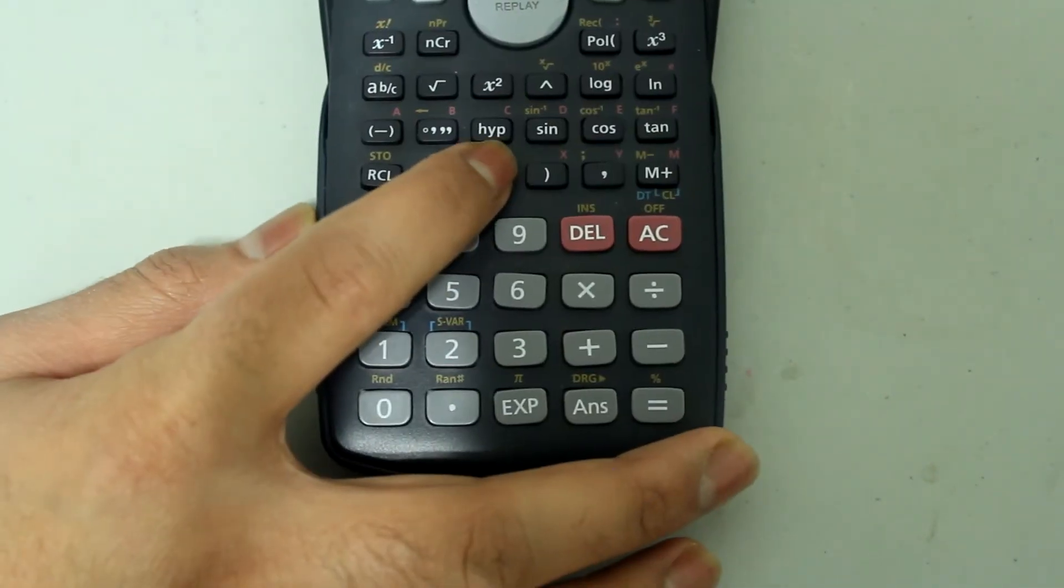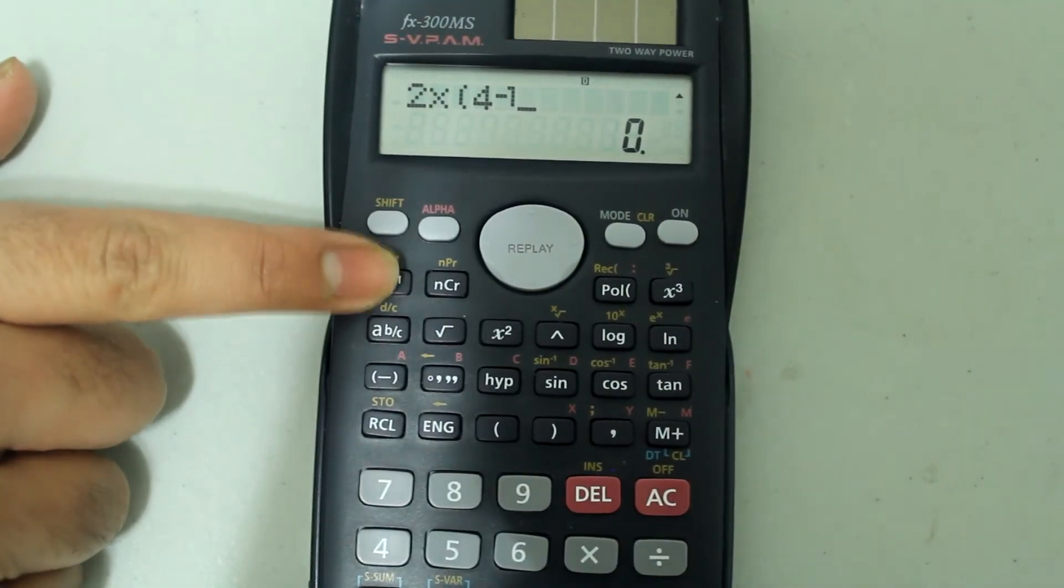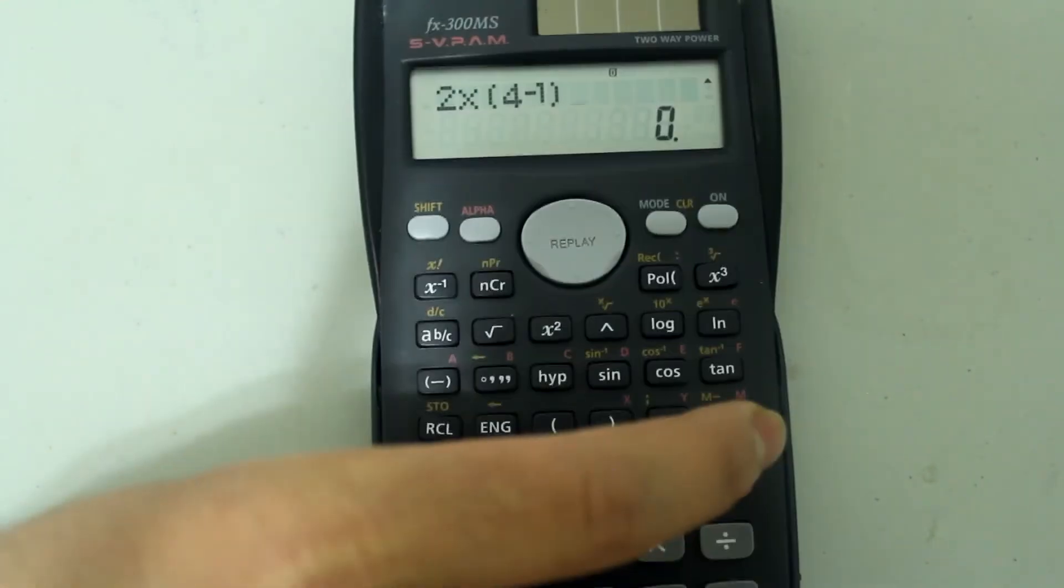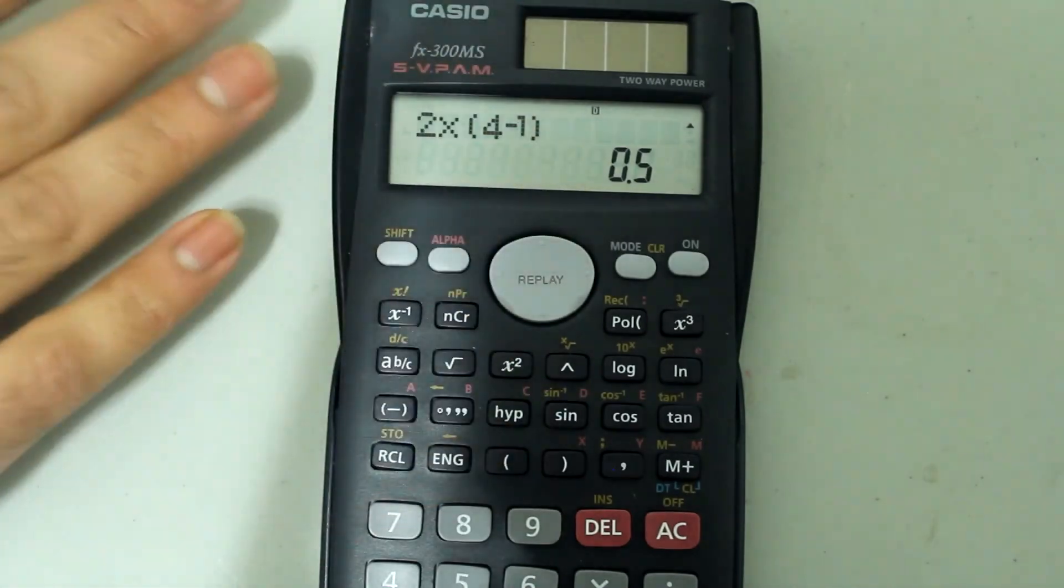and then we're going to do parentheses, 4, and then reciprocal. And just close the parentheses. This is what the entry looks like. And we're going to press equals to finally get this.